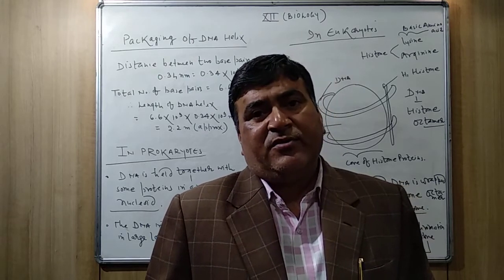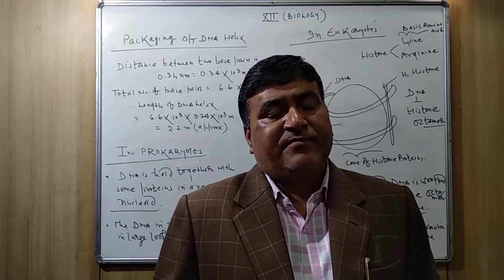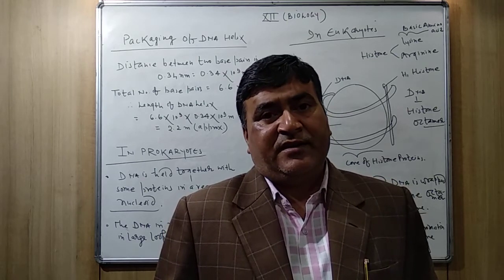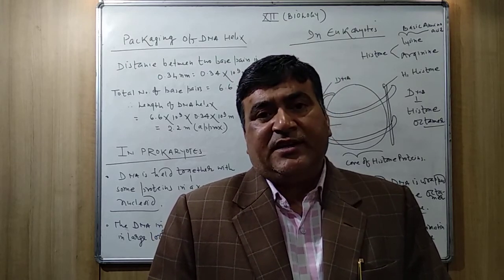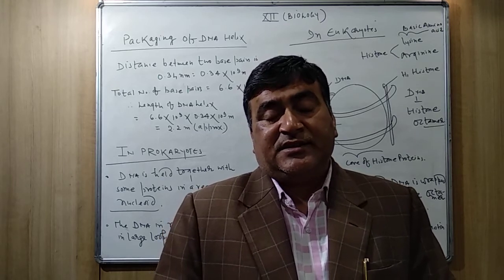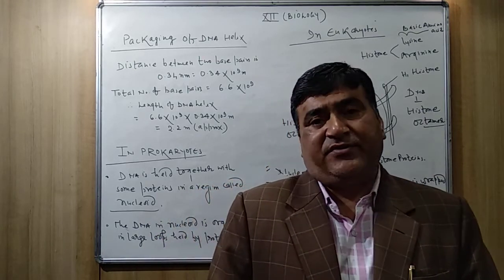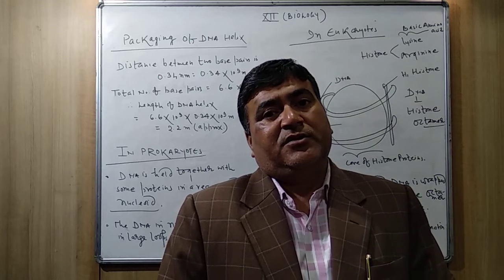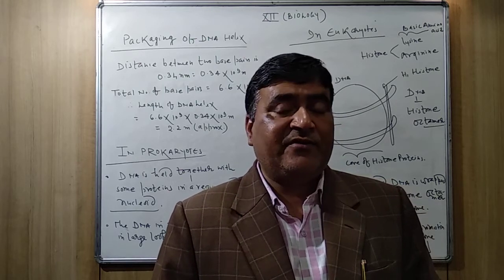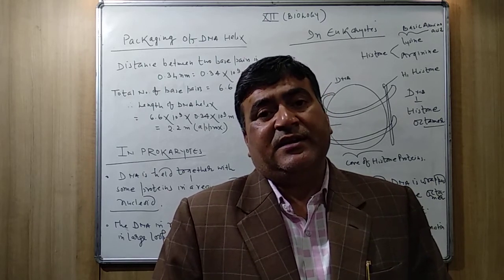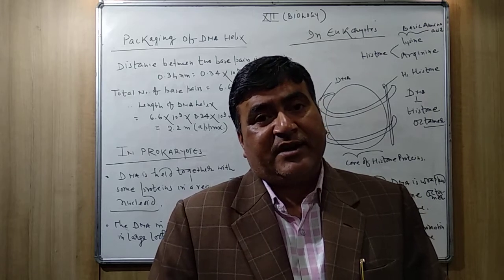But when we talk about the DNA, if you look at the size of the DNA when it is extended or relaxed, the size of the double helix DNA is nearly 2.2 meters. So the size of the DNA in extended form is 2.2 meters, while the size of the cell is microscopic — in the range of 5 to 10 microns.